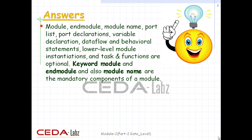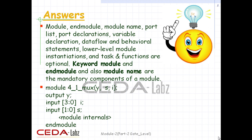The second question was to write a module definition for a 4-to-1 multiplexer, which has four inputs, two select lines, and one output. As we have not studied module internals yet, we don't need to mention them. So we start with module, module name as four_one_mux, followed by port list: y, s, i. Y is declared as output, and i is declared as input in vector form [3:0] as it has four inputs.